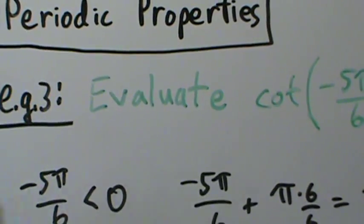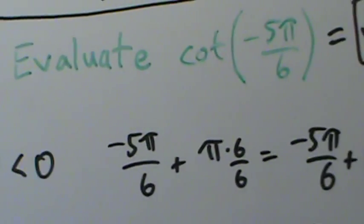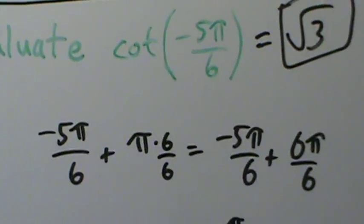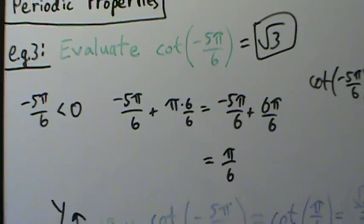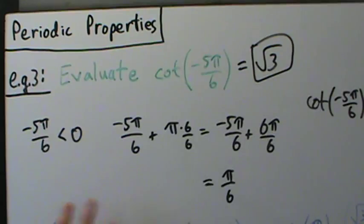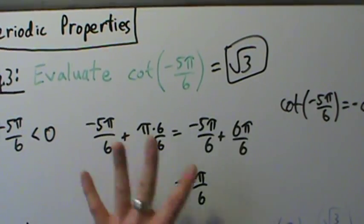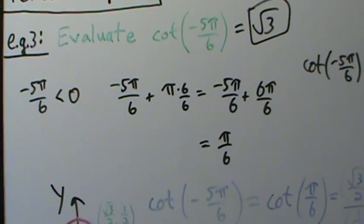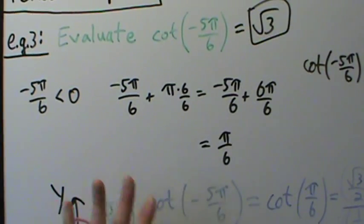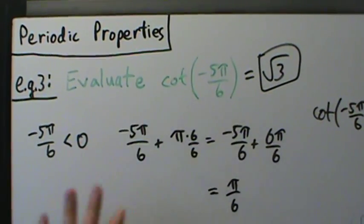We didn't do it that way because we wanted to use periodic properties. Since cotangent has period π, we added π once to get from negative 5π over 6 to π over 6. So there are three different ways to evaluate this expression: periodic properties, even-odd properties, and coterminal angles. Coterminal angles are equivalent to periodic properties for sine, cosine, secant, and cosecant, but for tangent and cotangent the period is π, not 2π.